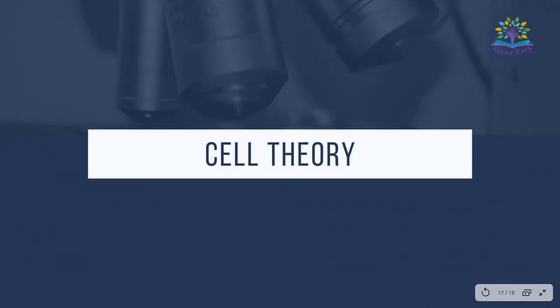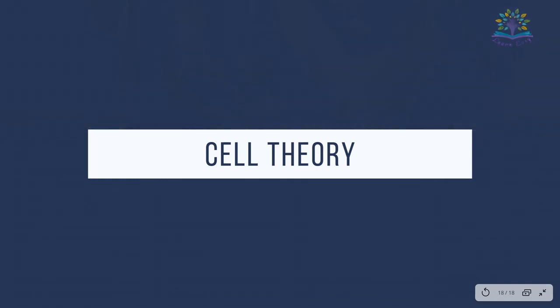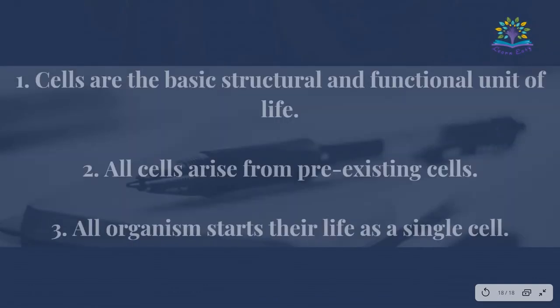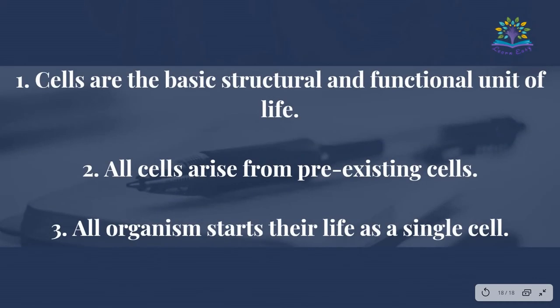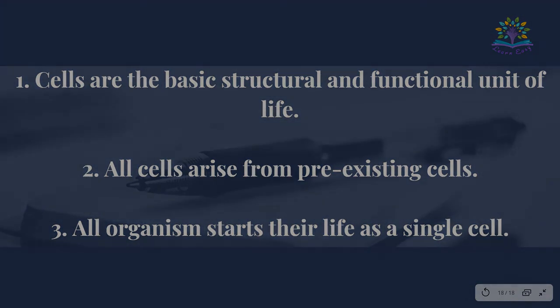Cell theory was put forward from the works of Matthias Schleiden, Theodore Schwann, and Rudolf Virchow. Its key points are: cells are the basic structural and functional unit of life; all cells arise from pre-existing cells; and all organisms start their life as a single cell.